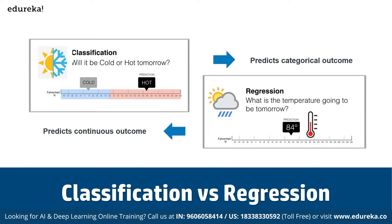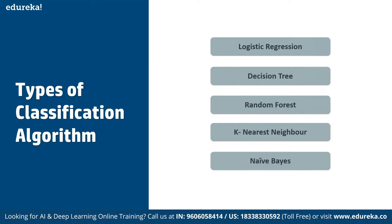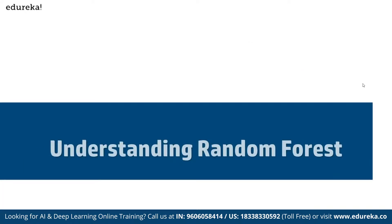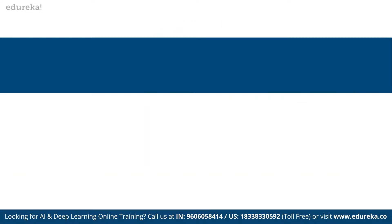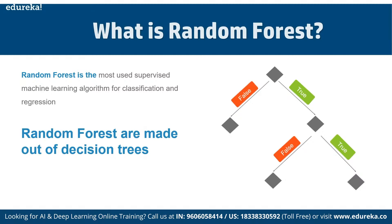In terms of types of classification algorithms, we have logistic regression, decision tree, random forest, K-nearest neighbors, and Naive Bayes. Now let's define random forest in terms of understanding: the random forest algorithm is a supervised classification and regression algorithm.